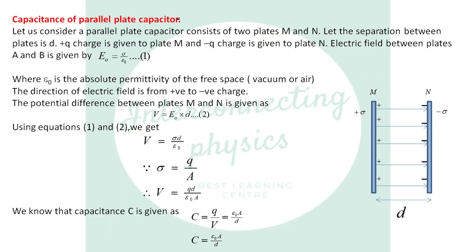So, capacitance of parallel plate capacitor. What is a parallel plate capacitor? A parallel plate capacitor consists of two plates separated by some distance, and the two plates generally have equal area. Let us say A is the area of the plate. Positive charge is distributed on plate M and negative charge on plate N — generally equal and opposite charges are given to the plates. Let plus sigma be the surface charge density of plate M and minus sigma be the surface charge density of plate N. The distance between two plates is D, and the medium between the plates is free space, that is vacuum or air.